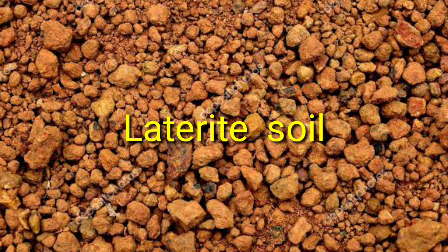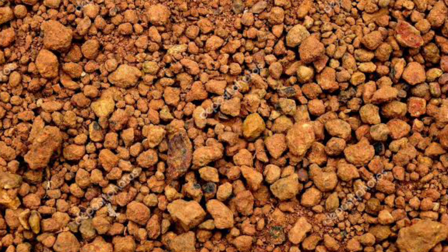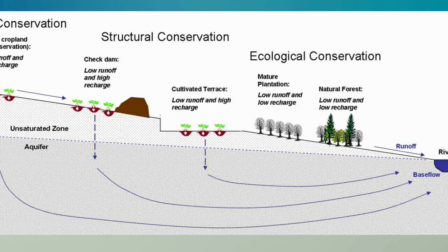Laterite soil is found in regions that have alternating dry and wet seasons. It is formed by the disintegration of laterite rocks and is found in the lower and hilly regions of Tamil Nadu, Karnataka, Kerala and Maharashtra. Desert soil is found in Rajasthan and mountainous soil is found in mountainous regions.